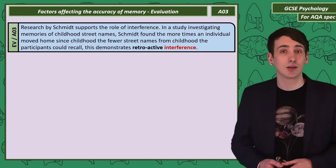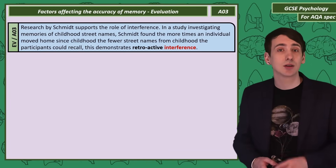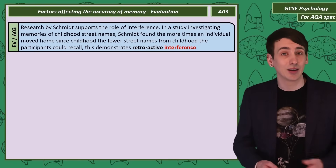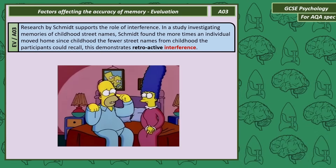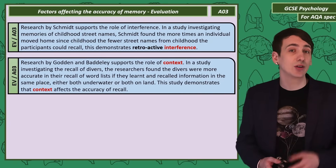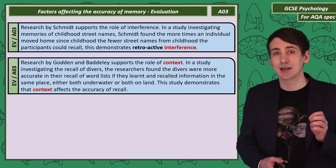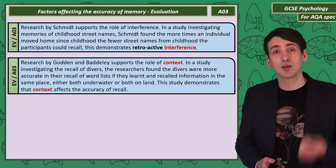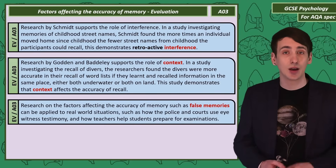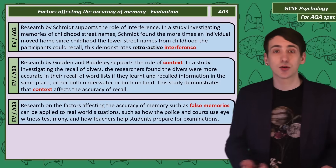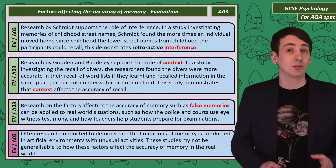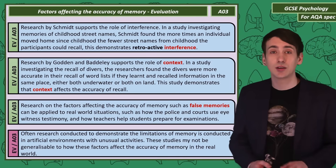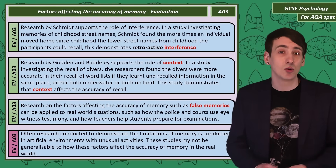Let's consider an evaluation for each of these factors affecting the accuracy of memory. There's research evidence by Schmidt showing that the more times someone moved house, the more difficult it was to remember the street names around their childhood home — supporting proactive interference. Supporting context as a factor, researchers Godden and Baddeley found that when they tested the recall of information in divers, information learned underwater was recalled best underwater, and information learned on land was recalled best on land. Research on false memories has practical applications for how police and law courts should treat eyewitnesses — trusting recall less than other forms of evidence. However, much of the research on the limitations of memory has been conducted in artificial environments using very unnatural activities, so the findings may not really apply to how we use memory in the real world.